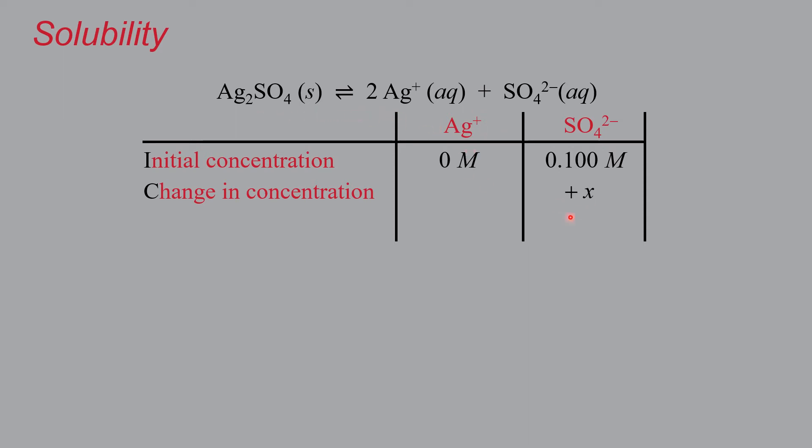increasing, adding to the sulfate by X molar. And at equilibrium that would give us 0.1 plus X molar sulfate. On the silver side, the concentration change is going to be twice, giving you a total of 2X molar silver.